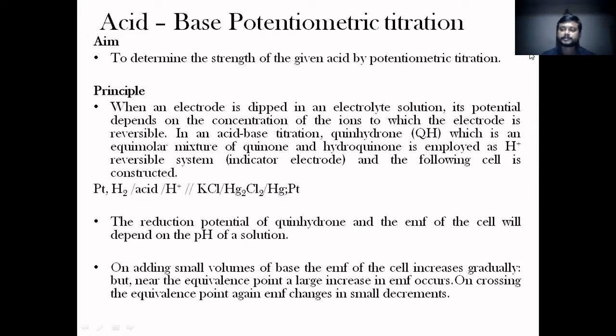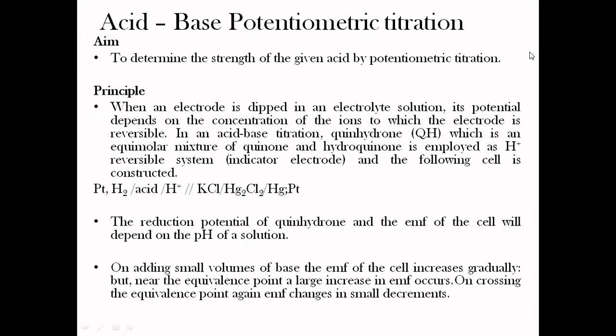Next we move on to the details of acid-base potentiometric titration. The main aim of acid-base potentiometric titration is to determine the strength of a given acid. Here we need two types of electrodes. The indicator electrode indicates the aim — to find the concentration of an acid — so the indicator electrode's potential depends on the concentration of H+ ions present in the unknown solution.